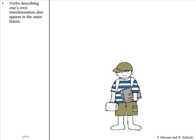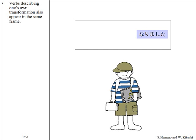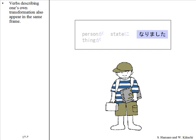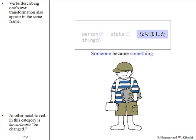Verbs describing one's own transformation also appear in the same frame. For example: Hiroshi ga shougakusei ni narimashita. Another notable verb in this category is kawarimasu.